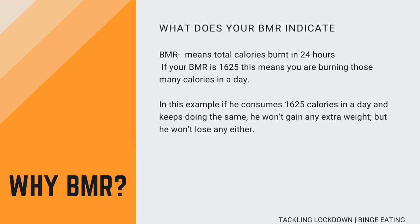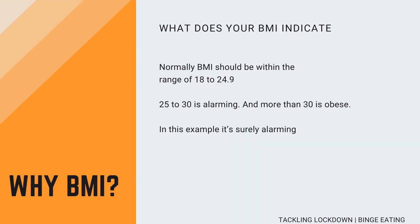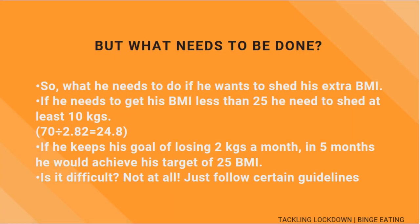BMR simply means the capacity of your body to burn calories in 24 hours. If your BMR is 1625, this means you are burning that many calories in a day. In this example, if he consumes 1625 calories a day and keeps doing the same, he won't gain any extra weight but won't lose any either. Now, BMI — normally it should be within the range of 18 to 24.9. 25 to 30 is alarming, and more than 30 is obese. In this example, it is surely alarming and he needs to do something to bring it down to acceptable levels.